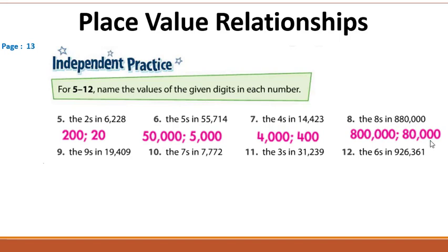For question nine, Mohamed answered: the first nine has a value of 9,000 and the second nine has a value of 9. So the first is one thousand times greater than the second — there is a difference of three zeros.